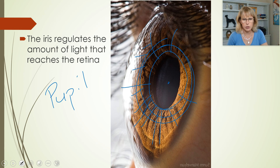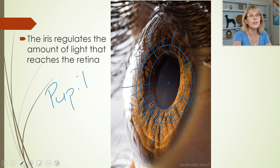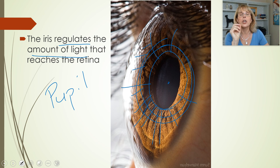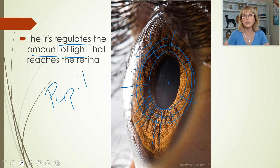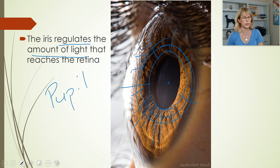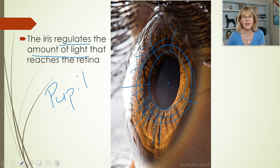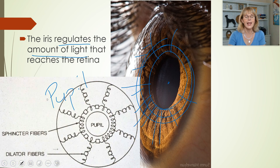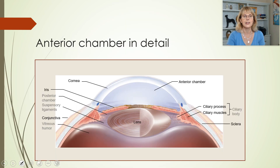The pupil is not really a structure — the pupil is a space in the middle of the iris, and the iris controls how big the pupil is. Why? To regulate the amount of light that reaches the retina. Those rods and cones are very delicate. If you shine too much light on them — like if you took a laser pointer and stared at it — you would kill some of those retina cells. The way our eye controls the amount of light that gets back there is by opening and closing the pupil. Sphincter fibers are the circular ones; radial fibers are the dilator fibers.